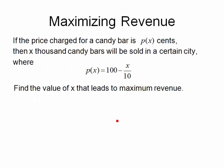In our first example, we are going to look at maximizing revenue. If the price charged for a candy bar is p(x) cents, then x thousand candy bars will be sold in a certain city, where p(x) = 100 - x/10. Find the value of x that leads to maximum revenue.